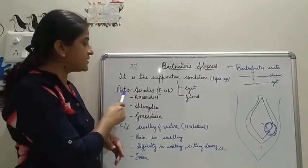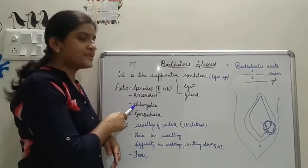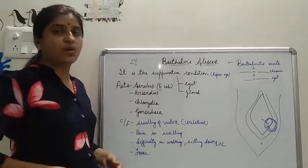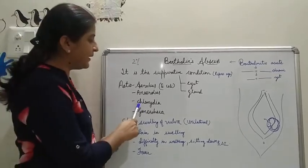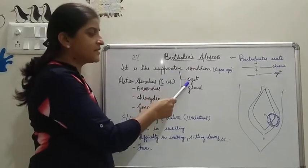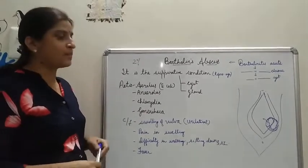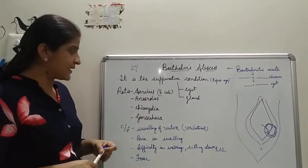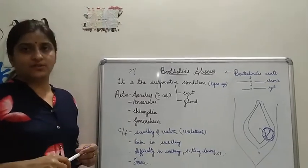The causes include aerobes, anaerobes, and polymicrobial organisms. Sexually transmitted infections are not so commonly occurring in Bartholin abscess but may occur—such as chlamydia, gonorrhea, and others. This is suppuration of either the cyst or the gland itself, with pus accumulation inside.